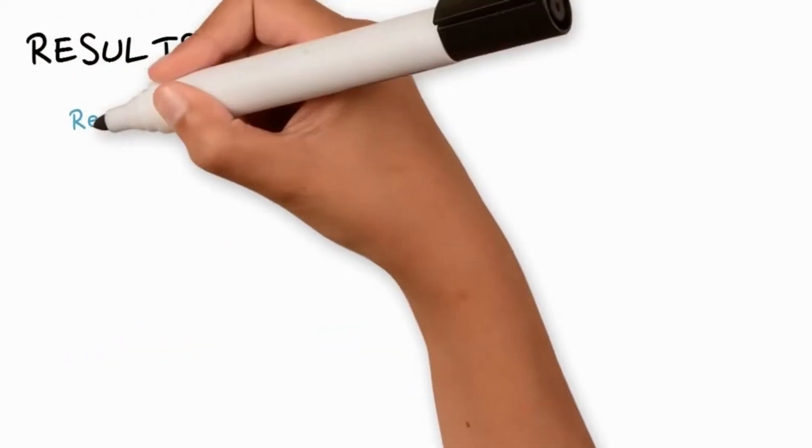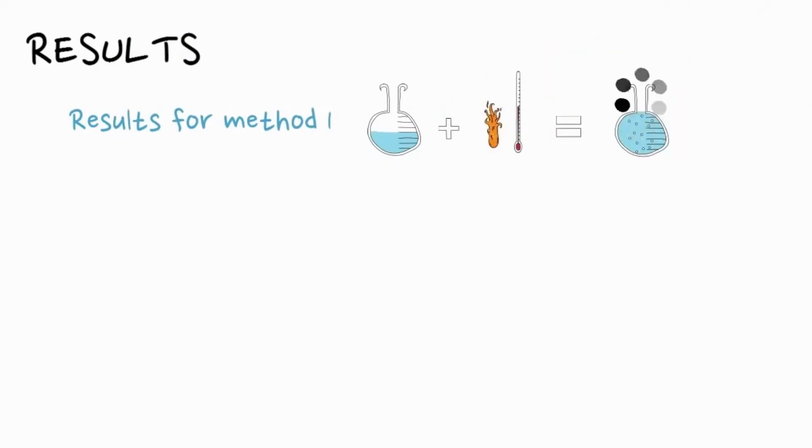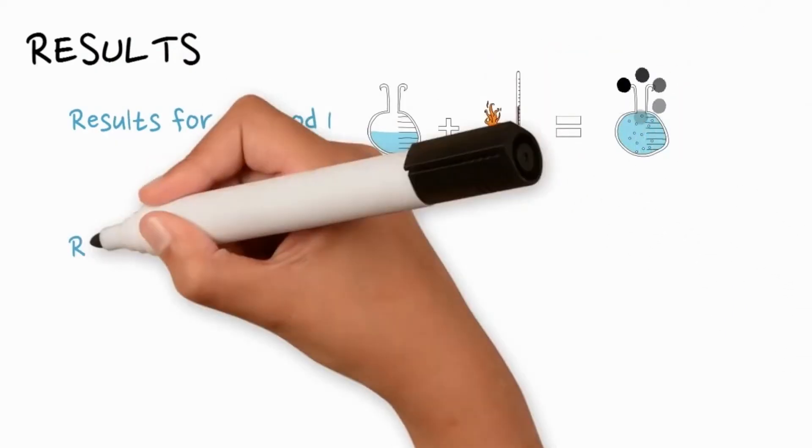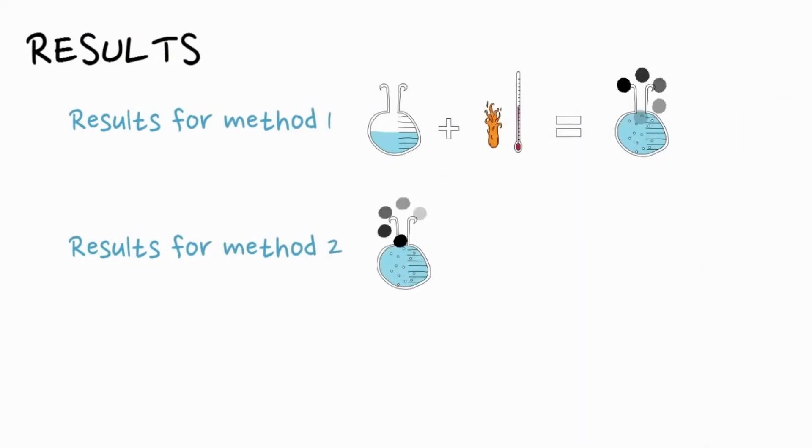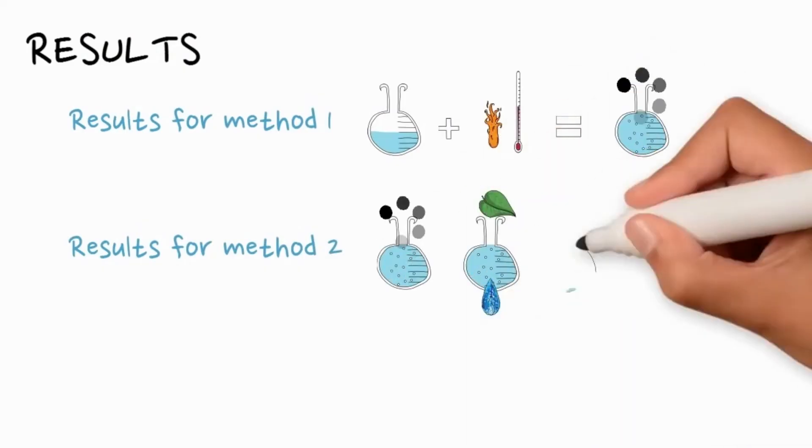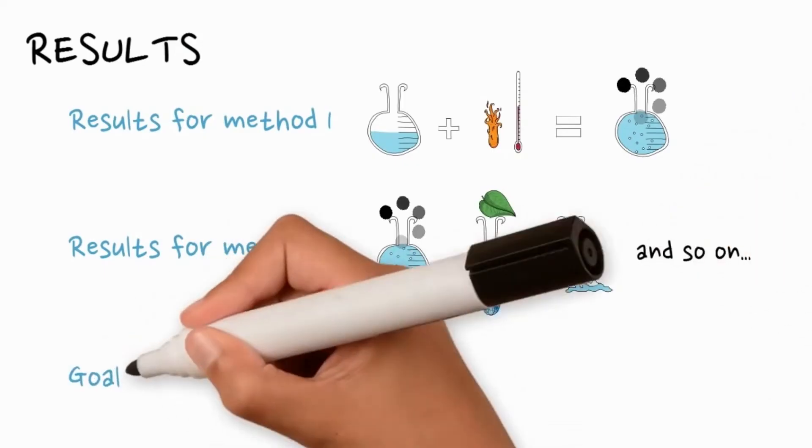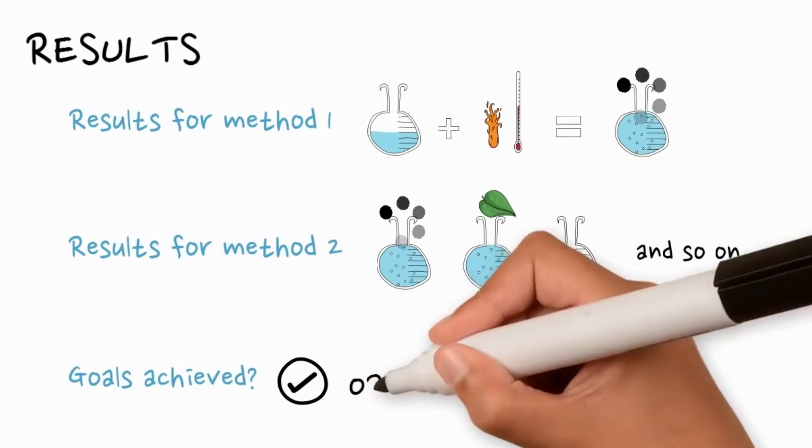In the results section, you must report the results for each method used and mention whether you were able to achieve the goals of your research.